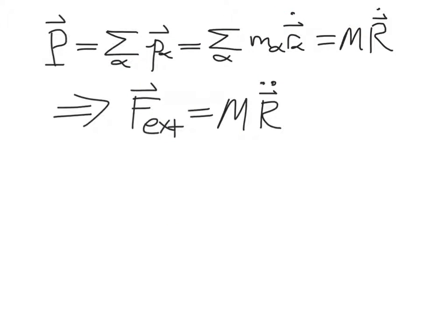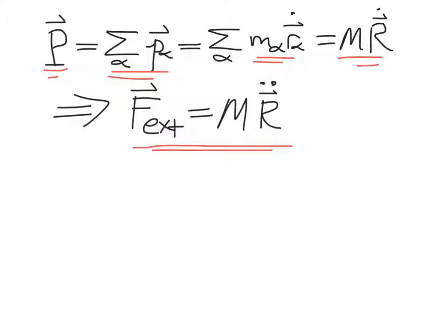Recall from previous chapters that we can define the total momentum vector for our system as the sum of the momentum vectors for each individual element. The total momentum vector is just the total mass of the system times the velocity vector for the center of mass. The net external force on the system results in an acceleration of the center of mass, so you can treat the whole system as if it were an infinitesimal particle located at the center of mass when thinking about the effect of external forces.